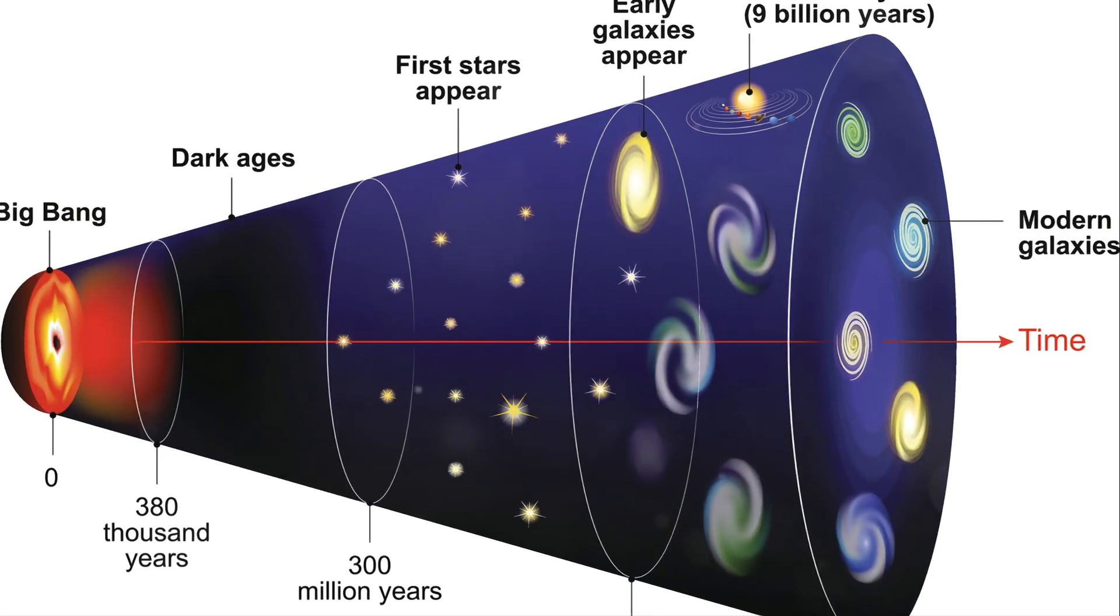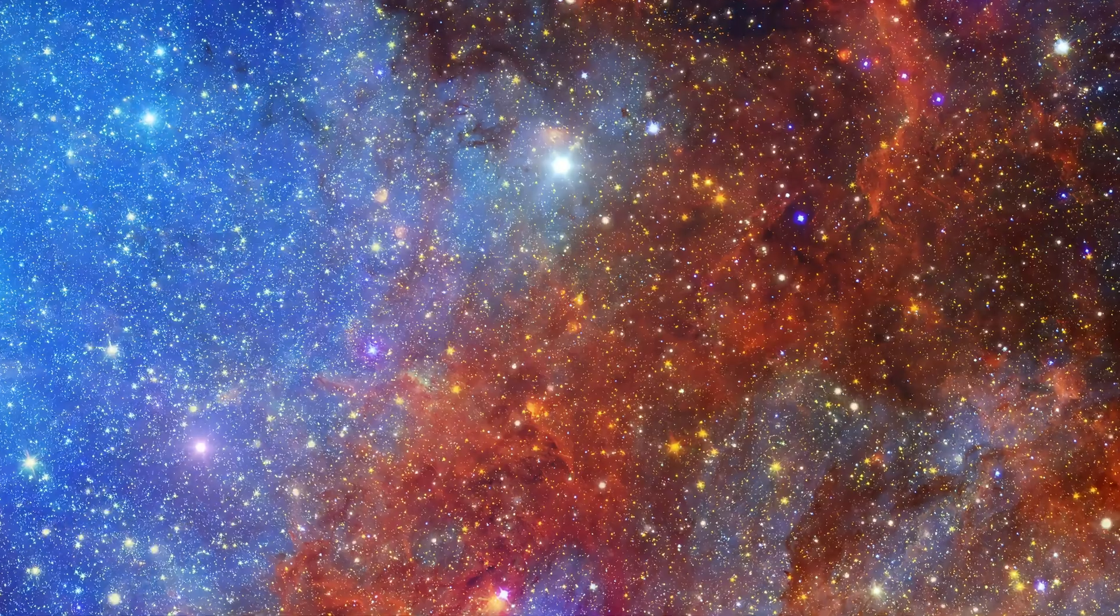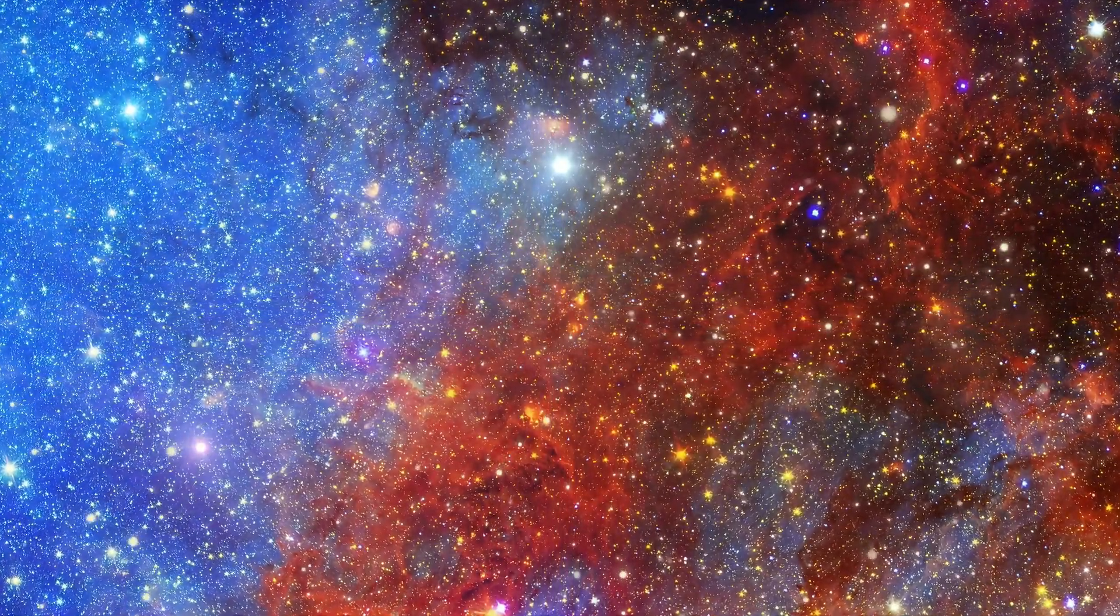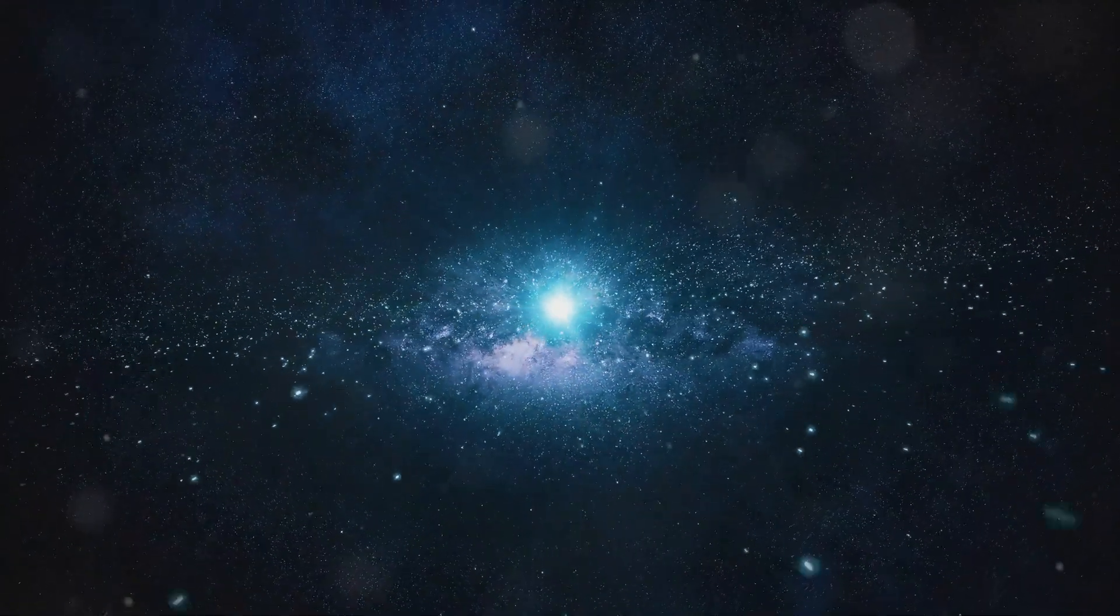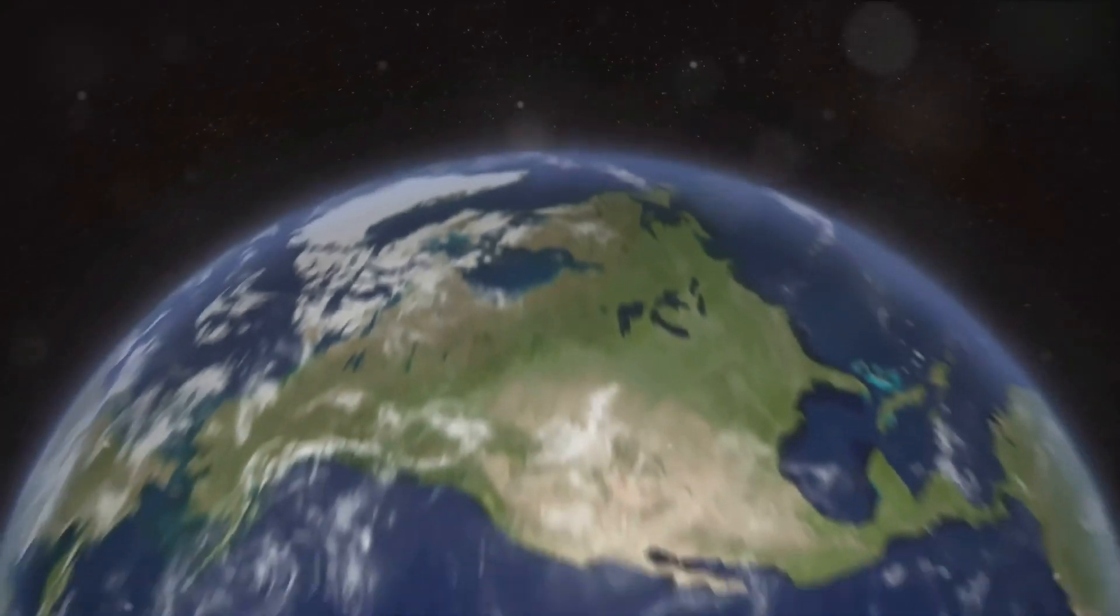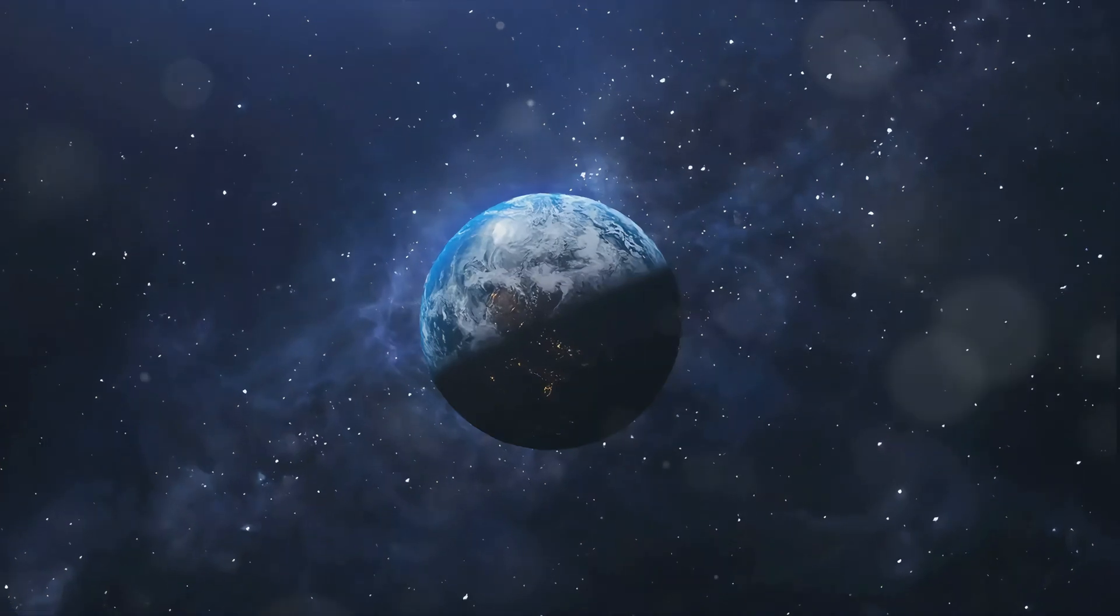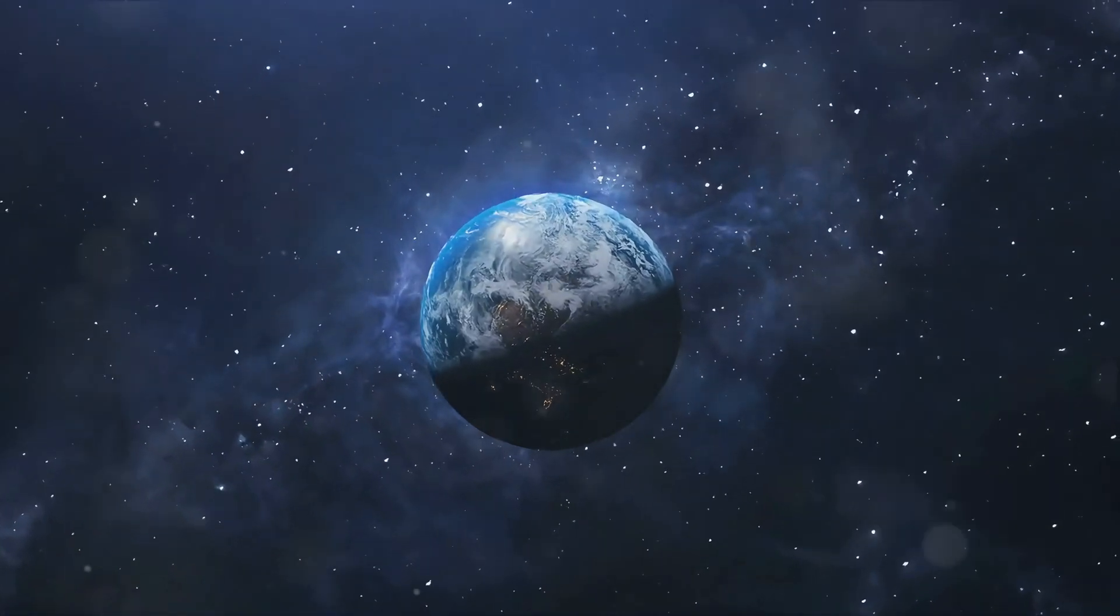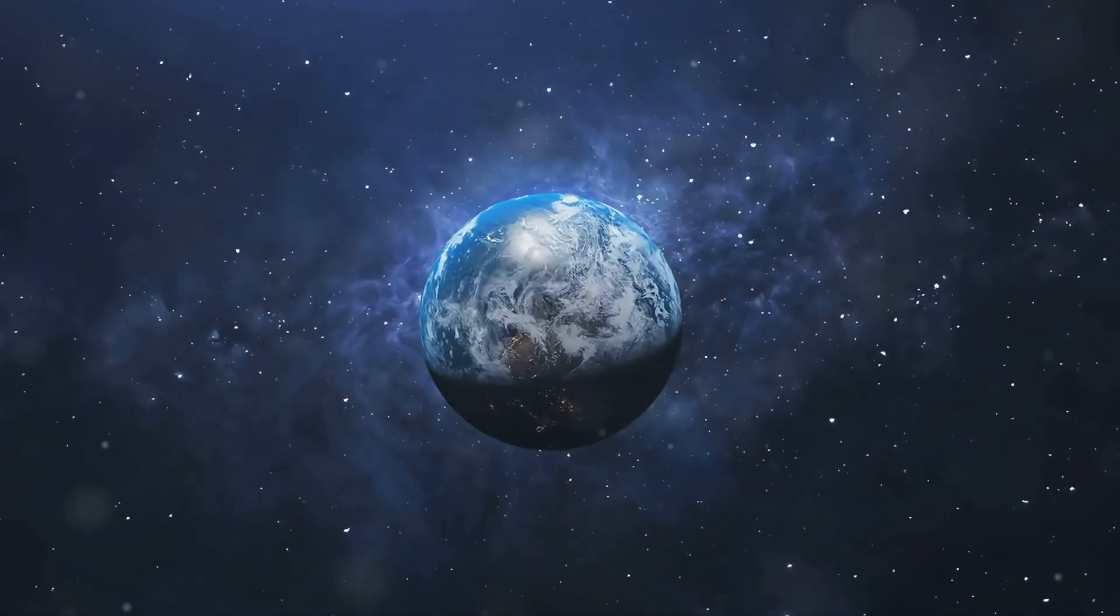Let's set the stage with the three main players in this cosmic drama. First, we have the open universe scenario, where the universe keeps expanding forever. Then we have the closed universe, where it eventually stops expanding and collapses back onto itself, resulting in a big crunch. Lastly, there's the flat universe, where the expansion continues but it gradually slows down. As we delve into the mysteries of the cosmos, we'll explore these three possibilities and what they mean for the universe's future.